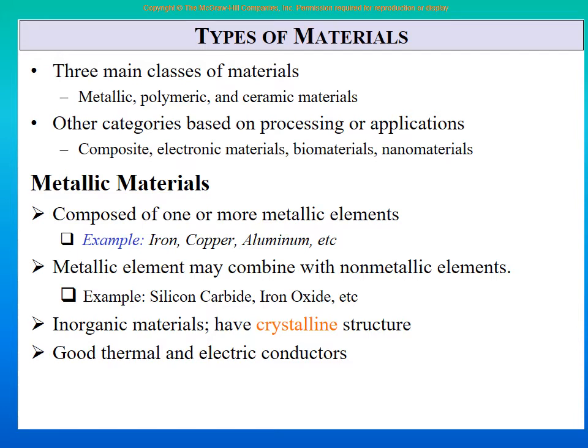We start with metallic materials, or metals. Then there is another category called polymers. There is another category called ceramics. So metals, polymers, and ceramics are the three most well-known big categories of materials. Automatically there will be a fourth category — non-metals — which we don't talk about too much: things like oxygen and nitrogen which don't belong to any of the other three categories. These are the four basic categories of materials, and then we get to more complicated ones like composites.